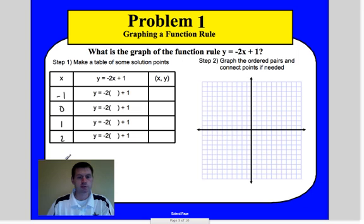So now that we have those, what we're going to do is this is our process column. And basically, we're going to plug in our negative 1 and we're going to work this problem out. We're going to say negative 2 times negative 1, that makes a positive 2. Positive 2 plus 1 makes 3.